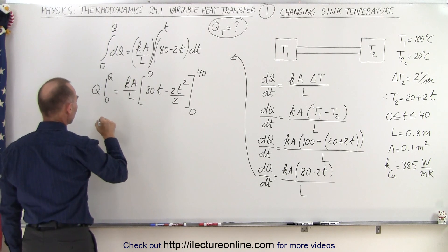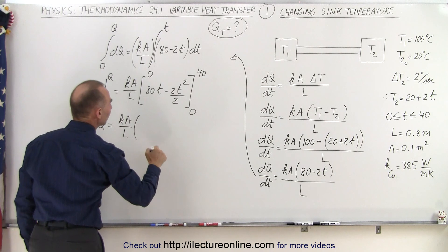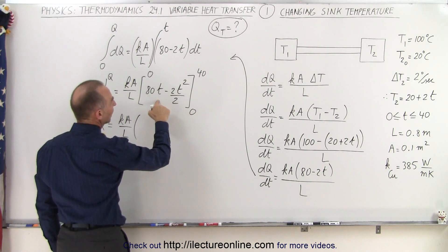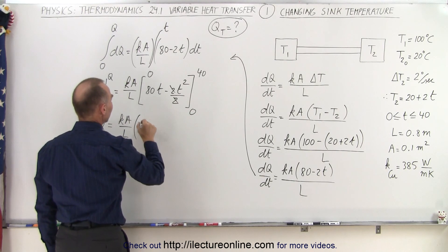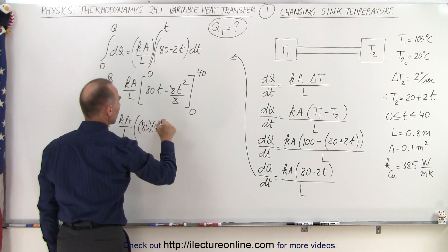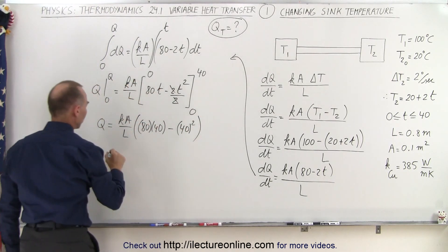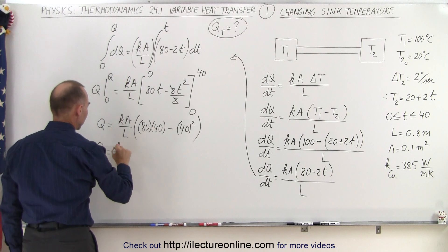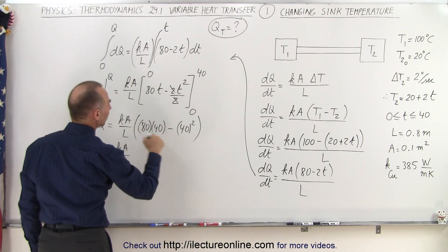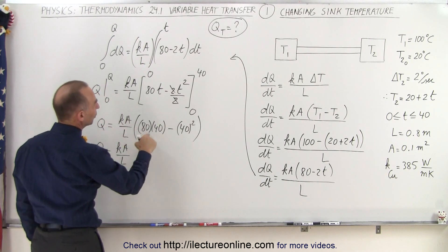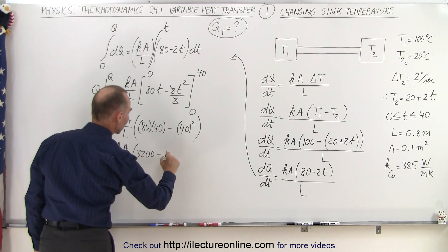That means the total heat transfer Q is equal to kA over L times, when we plug in the lower limit, we get nothing. Plug in the upper limit, that would be 80 times 40 minus 40 squared, like this. So this would be Q is equal to kA divided by L. 80 times 40 minus 40 squared, that would be 3200 minus 1600.